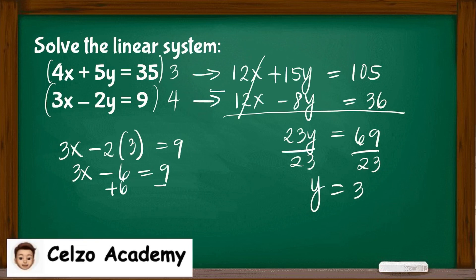Adding 6 to both sides, we have 3x = 15. Dividing both sides by 3, the x value is 5.